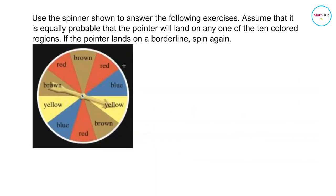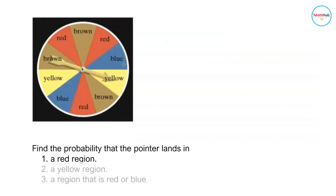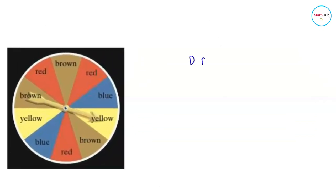Use the spinner shown to answer the following questions. Assume that it is equally probable that the pointer will land on any one of the 10 colored regions. If the pointer lands on a borderline, spin again. Find the probability that the pointer lands in: 1. a red region, 2. a yellow region, and 3. a region that is red or blue. To get the probability of landing on a red region, count the number of favorable outcomes — the number of red regions. We have three red regions, divided by the total possibilities of 10 colored regions.